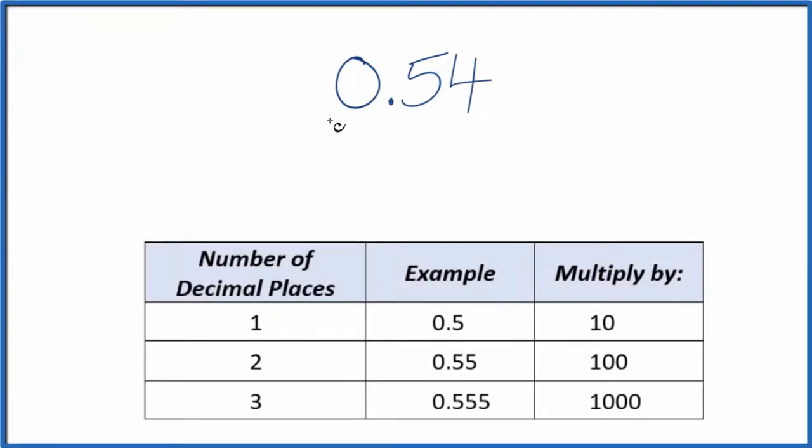If you're asked to write the decimal 0.54 in fraction form, here's how you do it. First off, let's call this 0.54 over 1. Still 0.54, we're just dividing by 1. But now we have the start of a fraction.